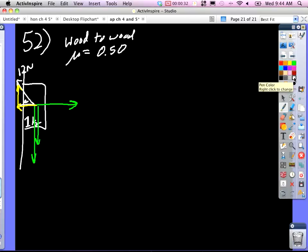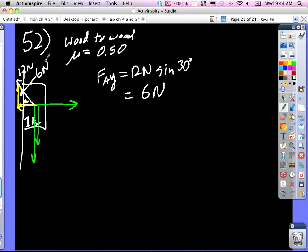Right? That's what they're asking? What happens? Well, we know that if you're pushing this way, this part up, so whatever, FAY is equal to 12 newtons times the sine, what is that, 30 degrees? Okay, so that's six newtons is pointing up.